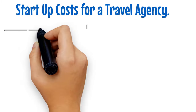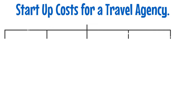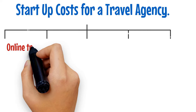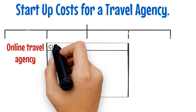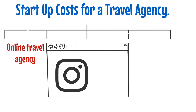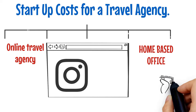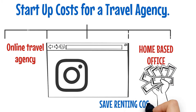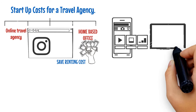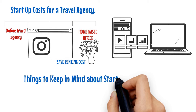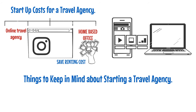Starting a travel agency can be a costly endeavor, but there are ways to cut down on startup costs. One way is to start an online travel agency by setting up a website and using social media to promote your business. Another way to reduce costs is to use a home-based office, avoiding the expense of renting office space. Finally, you can use technology to your advantage with online booking systems and software.